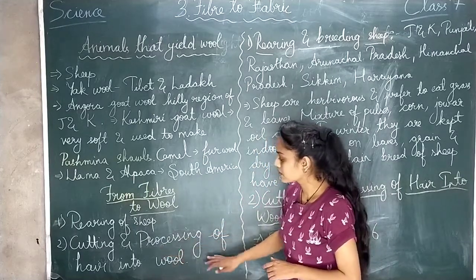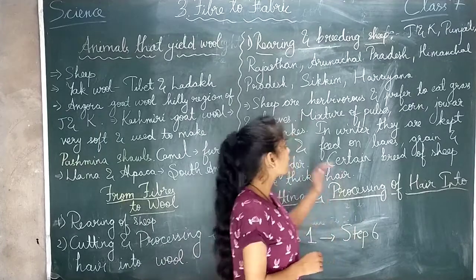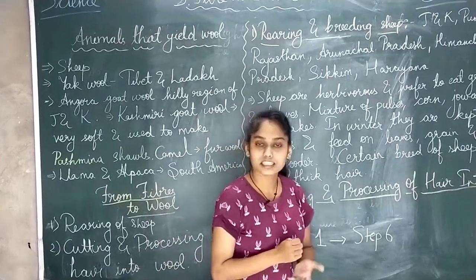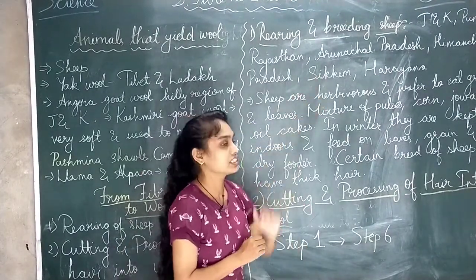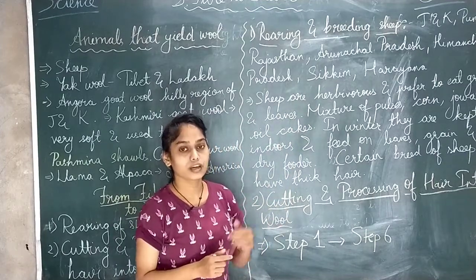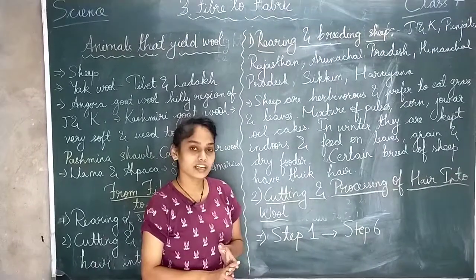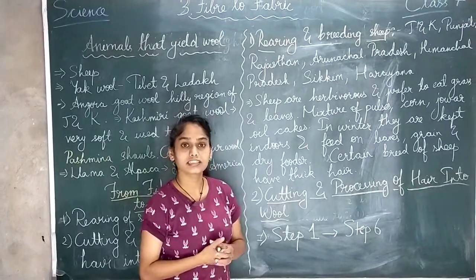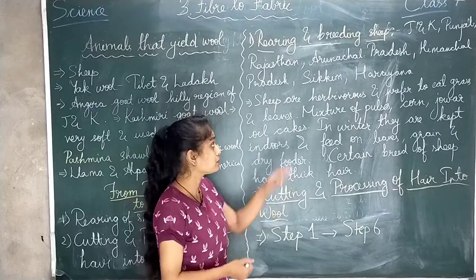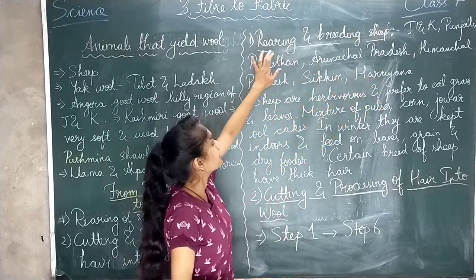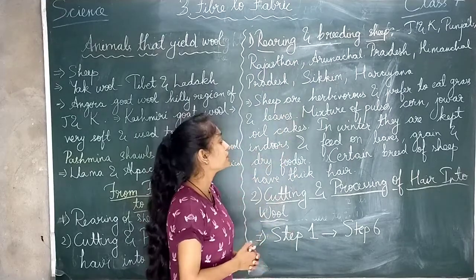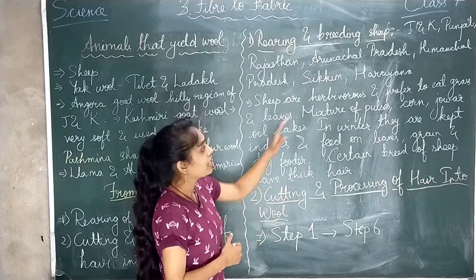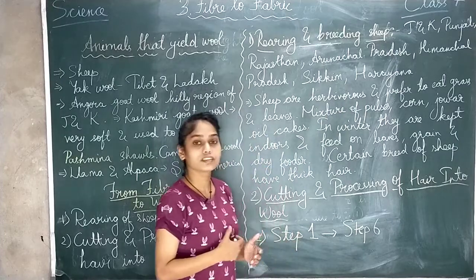So that is the cutting and processing of hair into wool. First, we will learn about rearing and breeding of sheep. Breeding of sheep means two types of sheep — those with good wool and those that are healthy — can breed through sexual reproduction to produce offspring with good quality wool characteristics. Rearing and breeding of sheep is done in Jammu Kashmir, Punjab, Rajasthan, Arunachal Pradesh, Himachal Pradesh, Sikkim, and Haryana.